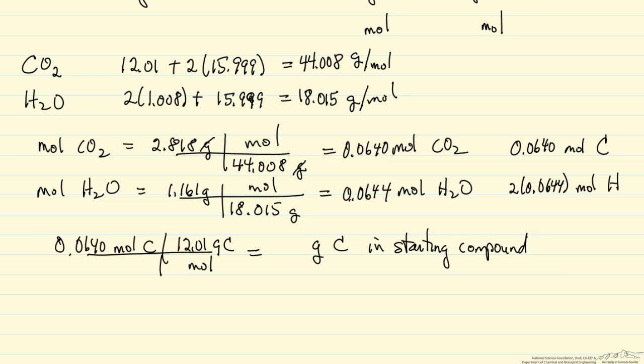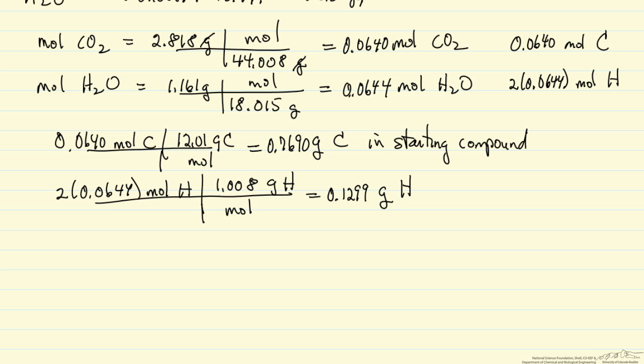I do the same thing for hydrogen. I have 2 times 0.0644 moles of hydrogen atoms. There's 1.008 grams per mole for hydrogen. So this is going to be the grams of hydrogen in my starting compound.